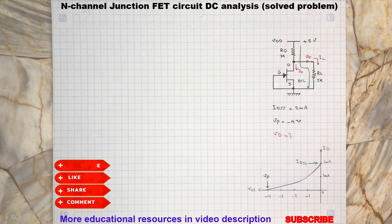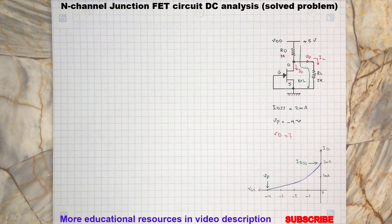Hello, this is a simple junction FET circuit where the gate-source terminals are grounded, which means no potential difference at VGS, so it is 0 volts. We are interested to know the voltage value at the drain terminal.